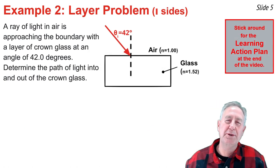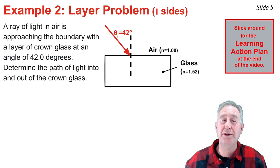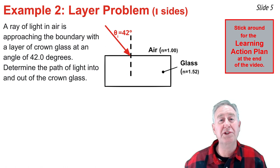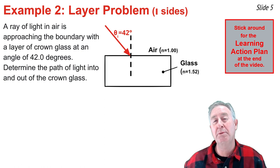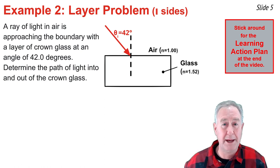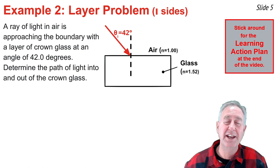In the second problem, I once more have light in air approaching a boundary with glass. I know the angle of incidence and the two indices of refraction values. But this is a layer problem: once the light enters the glass, it will pass through and exit back into air on the opposite side of the layer. I want to trace the path of light into, through, and out of the glass. I begin by analyzing the first boundary.